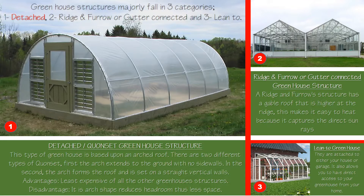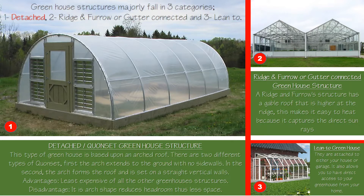Category one is the detached concept greenhouse structure. As seen here, this type is based on the arched roof and can be divided into two types: one where the entire arch goes all the way to the ground — which is the direction we shall be following today — and another where the arch sits on straight vertical walls. The advantage of this detached greenhouse structure is that it's the least expensive of all greenhouse structures. However, its big disadvantage is that the arched shape reduces the headroom to the sides, which reduces the available space within the greenhouse.